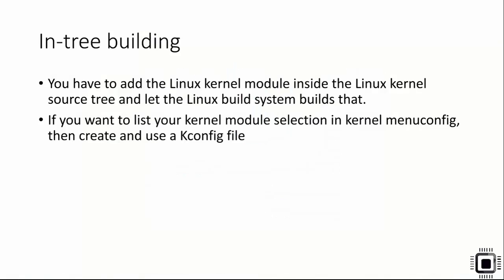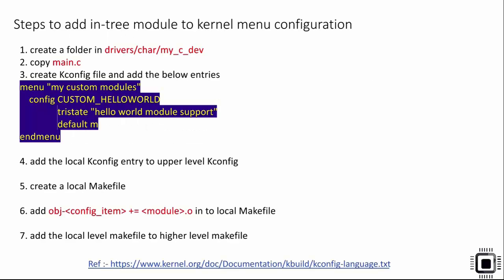In this lecture, let's understand in-tree building. We are going to build our kernel module by adding it inside the Linux kernel source tree and let the Linux build system build it. If you want to list your kernel module selection in kernel menuconfig, you have to create and use a kconfig file. When you do menuconfig, the Linux configuration will come in the form of menus, and from there you can select or deselect your kernel modules.